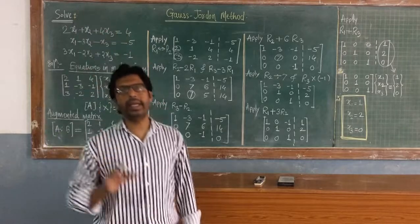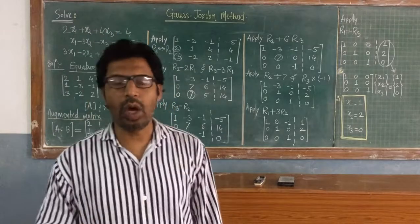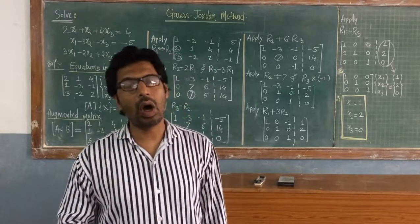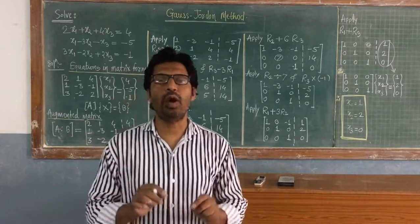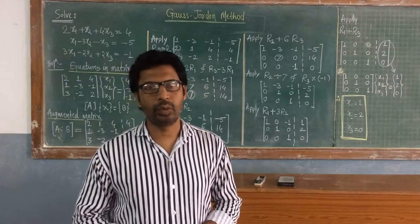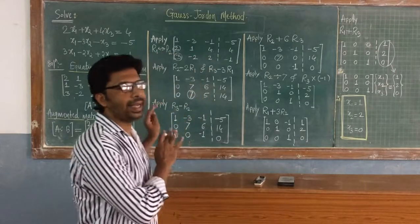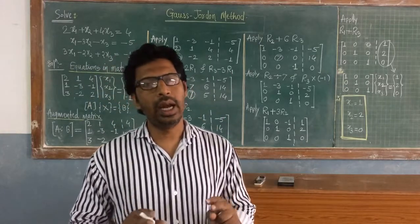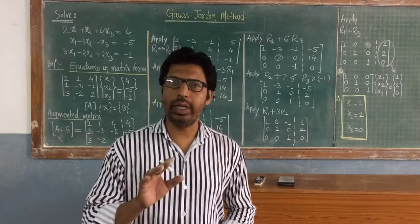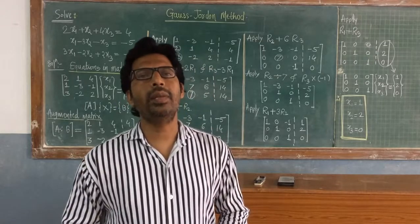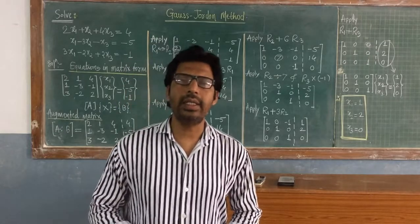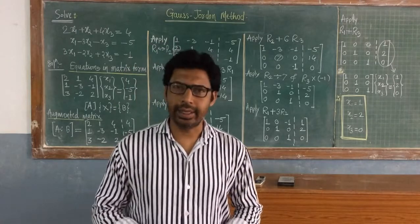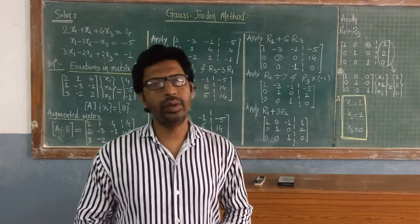Remember, to convert matrix A into normal form, we apply either row operations or column operations — we cannot perform both operations together. This is the second numerical method in Unit 1, Computational Techniques. Only the third and last numerical method remains, called the Gauss-Seidel method, which we will see in the next class. Thank you very much.